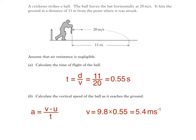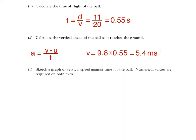On to part c. Sketch a graph of vertical speed against time for the ball. Numerical values are required on both axes. So, we'll start here with our axes, then label the y-axis speed v in metres per second, and the x-axis time t in seconds. Don't forget to draw in the origin too.